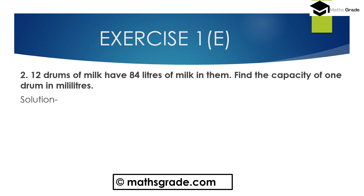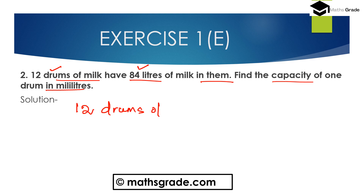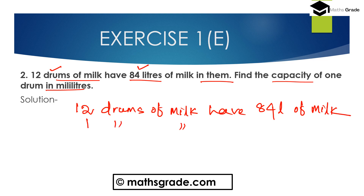Question number 2: Twelve drums of milk have 84 liters of milk in them. Find the capacity of one drum in milliliters. So 12 drums have 84 liters of milk total.